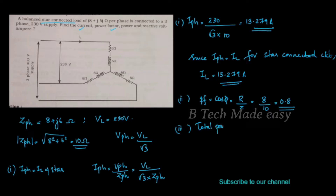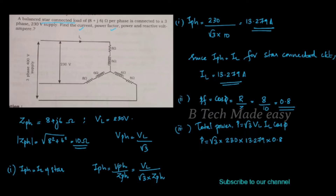Total power P is equal to root 3 into VL into IL into cosφ. That is P equals root 3 into 230 into 13.279 into 0.8.